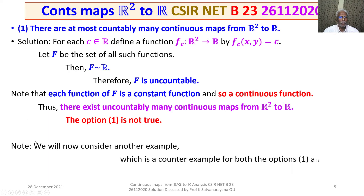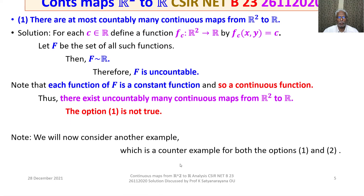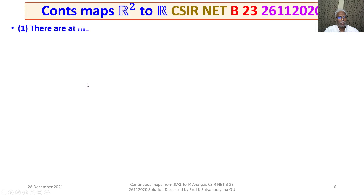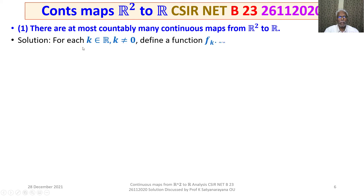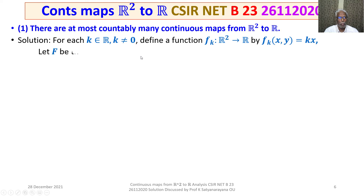Note: we will now consider yet another example which serves as a counterexample for both options 1 and 2. For each K belonging to R with K not equal to 0, define a function F_K from R square to R. Let capital F be the set of all such functions.